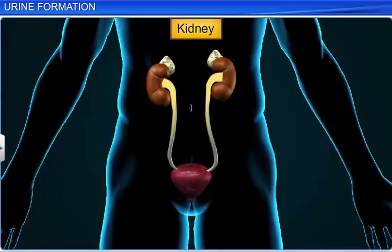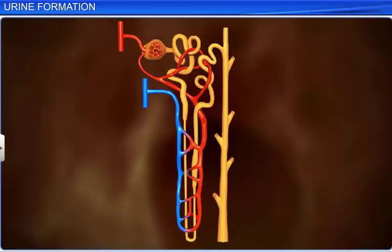The kidney is the major excretory organ in humans, and one of its primary functions is urine formation. Each kidney contains about a million nephrons, which are the basic functional units of the kidney, and help in urine formation.